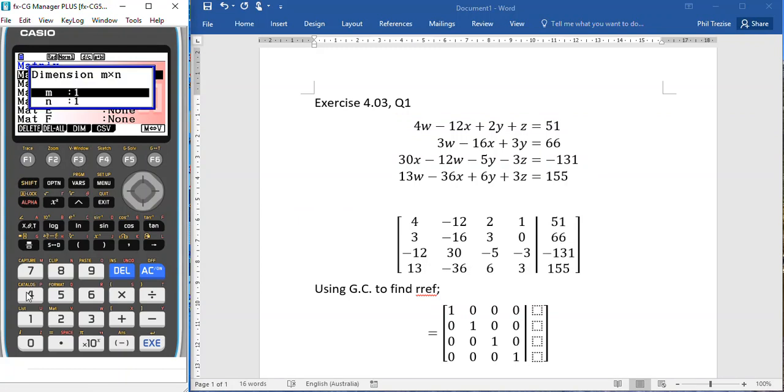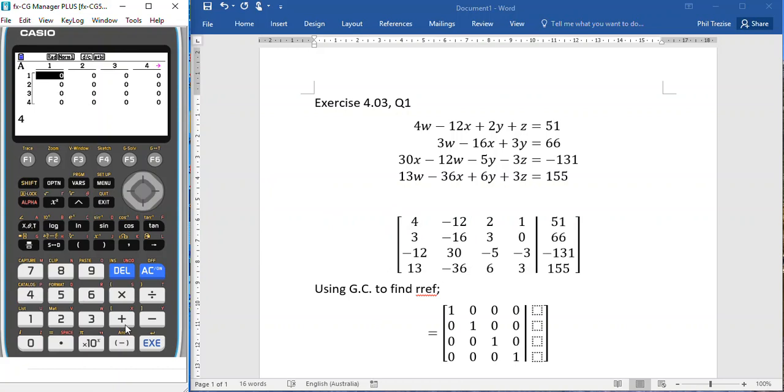So on the calculator what do we do? We go to matrices and vectors and matrix A will do. We'll set the dimensions to 4 by 5. Remember rows by columns. And now I get the fun job of entering all of these. So it's just in the usual way. As we hit enter it jumps across. Now at this point I'll pause the video and pick up in a minute once this is done.